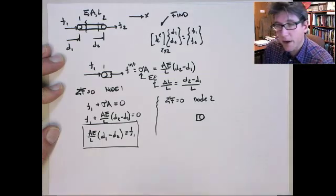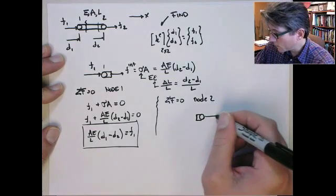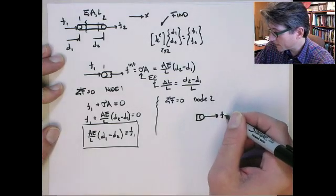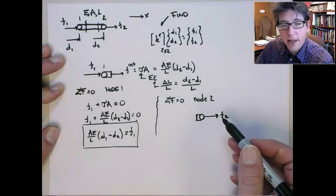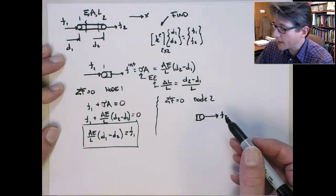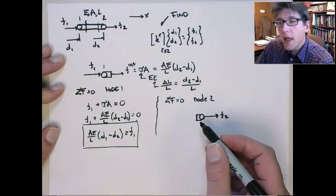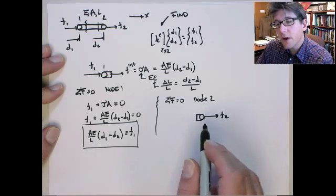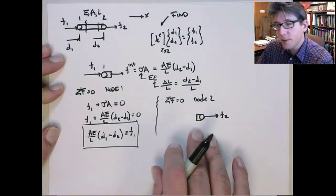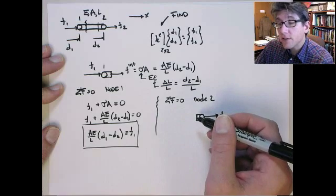This is what our free body diagram will look like. We have the externally applied force, F2. And now again, balancing or equilibrating F2 is going to be the internal force. Now, the internal forces are going to change direction, and that's because of the fact that the positive sense of the